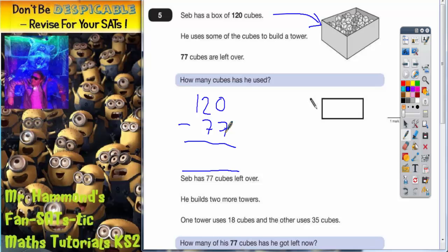So 0 take away 7 we can't do, so we've got to borrow one. Borrow one from the 2, that's going to knock it down to a 1, and the 1 we borrowed goes next to 0 to make 10. 10 subtract 7 is 3.